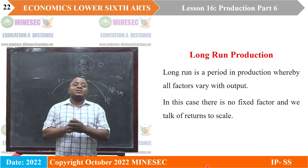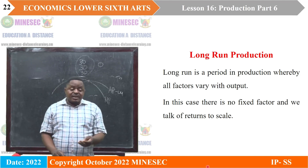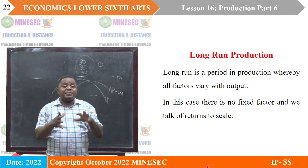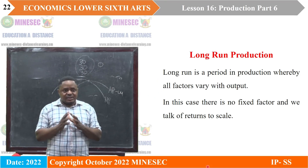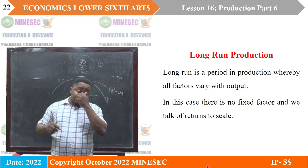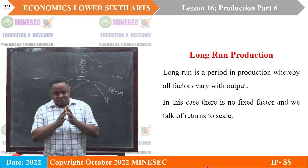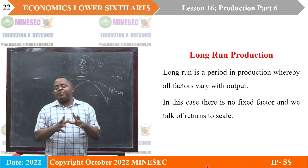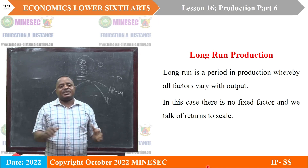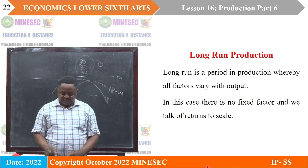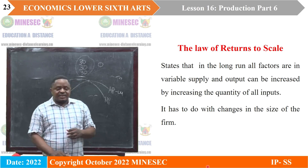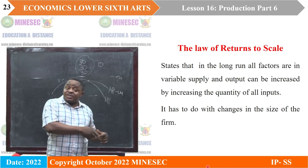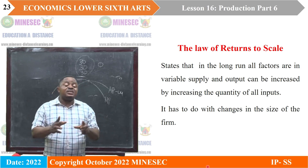Talking about long run production, the long run is a timeframe long enough for the firm to adjust even the scale of production and its size. In this case, the firm will have to vary all its factors — vary labor, vary land, vary capital. There is no factor of production that is still fixed. Therefore, the firm at this point is no longer subjected to the law of diminishing returns; it is subjected to the law of return to scale, meaning the returns of the firm are based on the size of production.